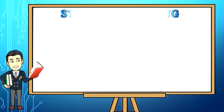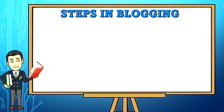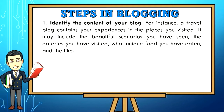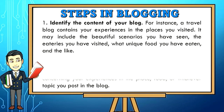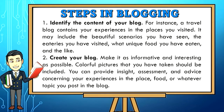Steps in blogging. If you are interested in making a blog for yourself, keep in mind the following. Step 1: Identify the content of your blog. For instance, a travel blog contains your experiences in the places you visited. Step 2: Create your blog — make it as informative and interesting as possible.